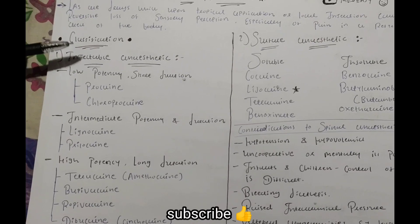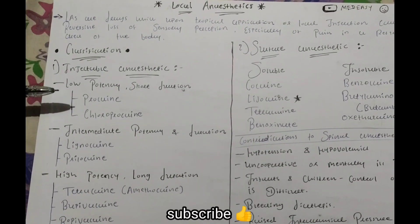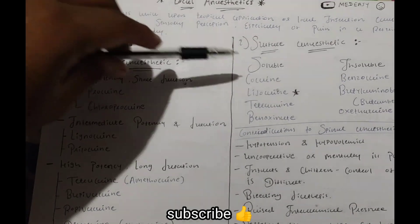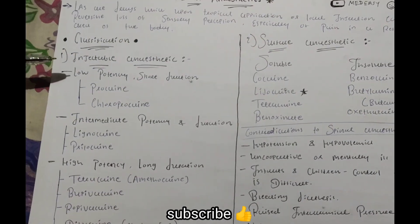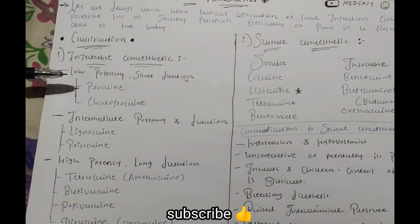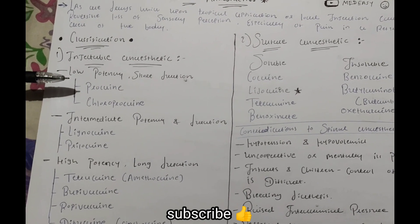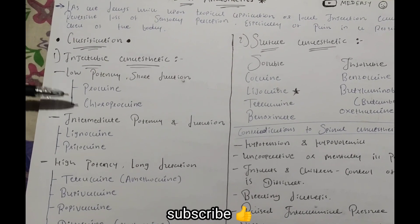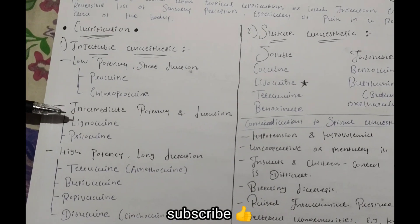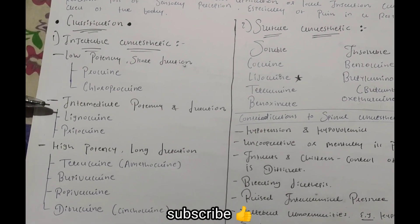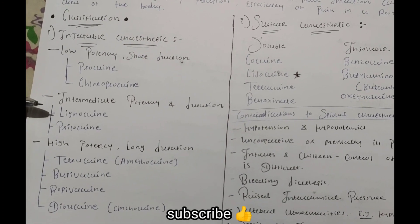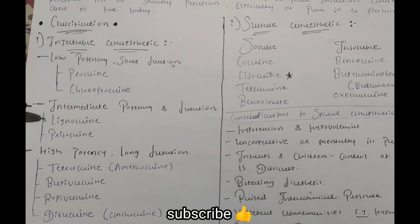Now we are going to talk about classification of local anesthesia. First is injectable anesthesia. This may be two types: injectable and surface anesthesia. Injectable anesthesia includes low potency and short duration like procaine and chloroprocaine, and intermediate potency and duration.